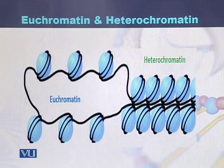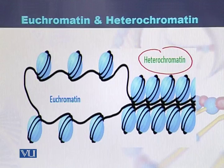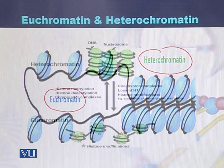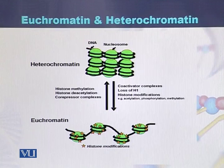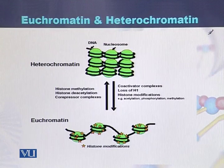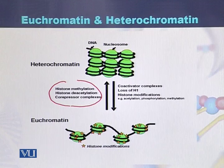Here we can see both types of chromatin: heterochromatin, which is in a compact form, and U-chromatin, which is in a relaxed form. Heterochromatin and U-chromatin can be changed from one to the other. U-chromatin can be changed into heterochromatin by the process of histone modification, histone deacylation, as well as core repressive complexes.